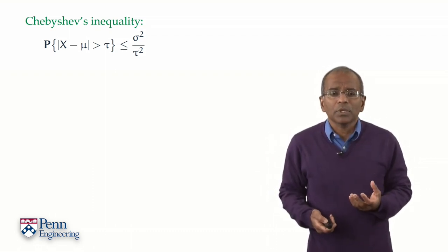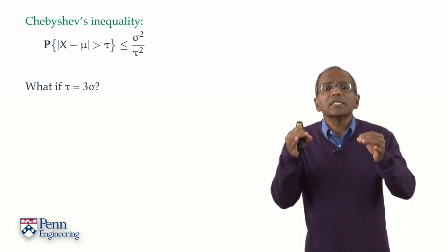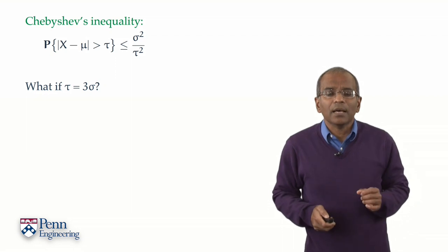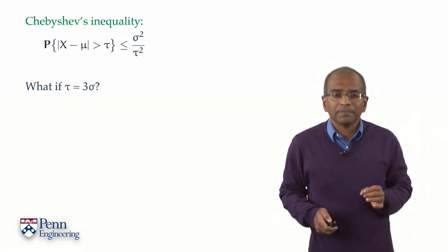Here's a concrete question. What if we look at three standard deviations from the center? What if tau is three times sigma?